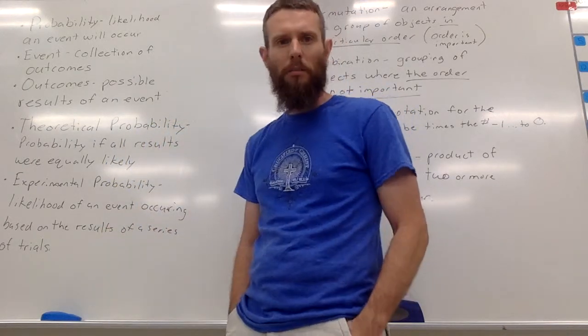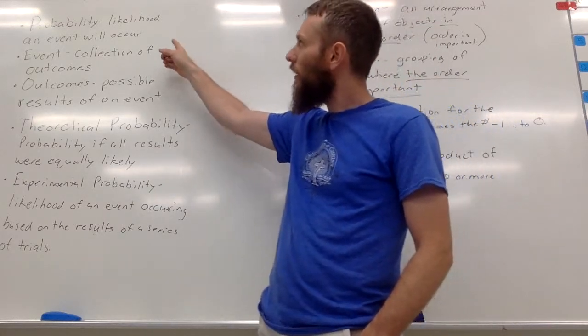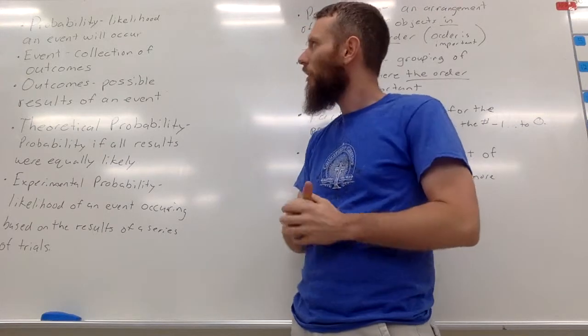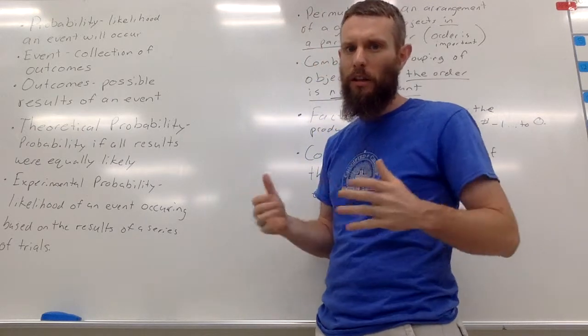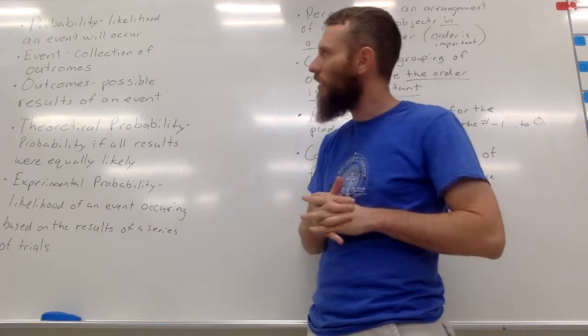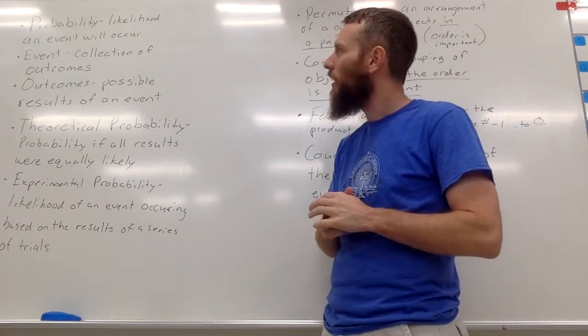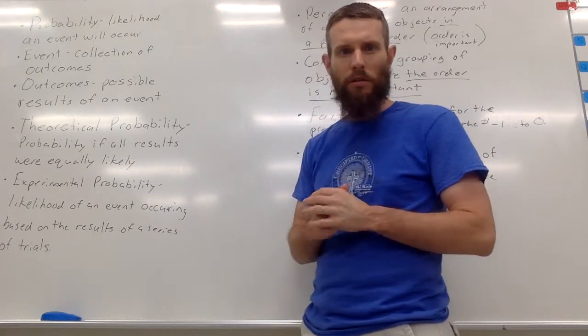Okay, first of all, what is probability? Probably, the probability is the likelihood that an event will occur. And there's a little bit of, we have to unpack all of these terms, and when we put them together, maybe it will make sense. So the likelihood that an event will occur. So what's an event? Well, an event is a collection of outcomes, all the possible outcomes of an event. And the outcomes are the possible results of an event.